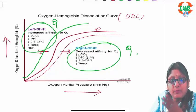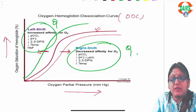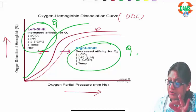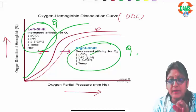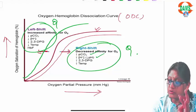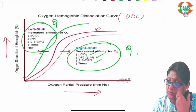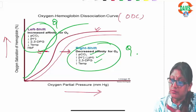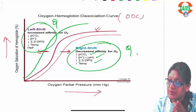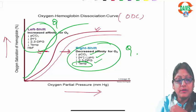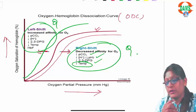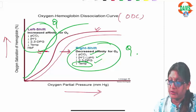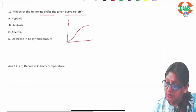Rightward shift is caused by: high CO2, high hydrogen ion (low pH), high 2,3-BPG (DPG), and high temperature. The reverse is true for leftward shift. High temperature causes rightward shift; low temperature causes leftward shift.